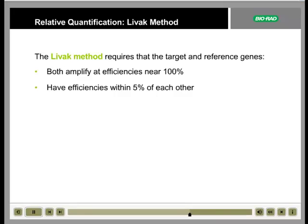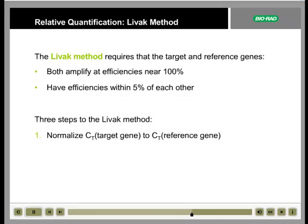The Livak method is also called the delta-delta-CT, or double-CT method, because it requires the determination of two delta-CT, or difference in CT values. In the first step, normalize the CT of the target gene to the CT of the reference gene. In the second step, normalize the delta-CT of the test sample to the delta-CT of the calibrator sample.